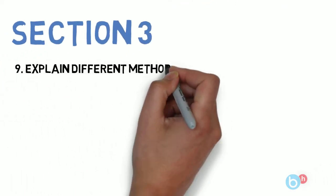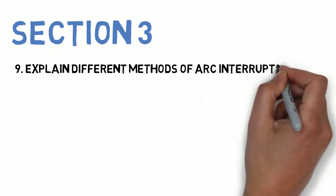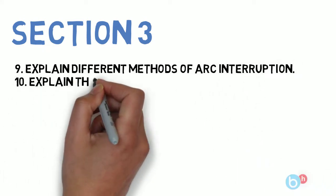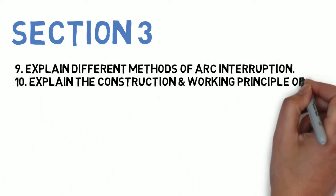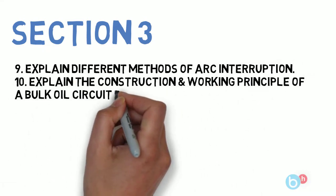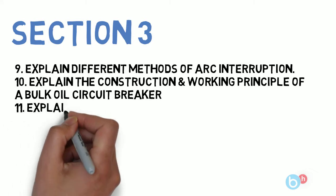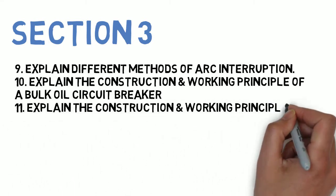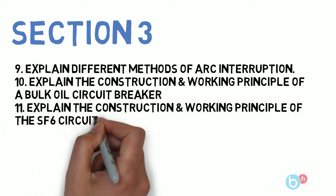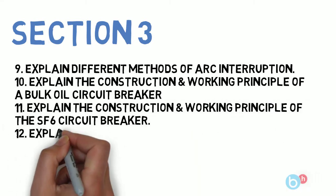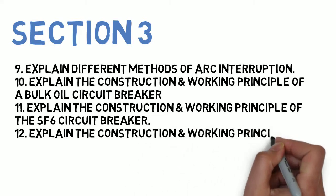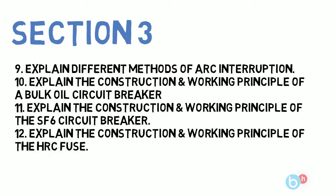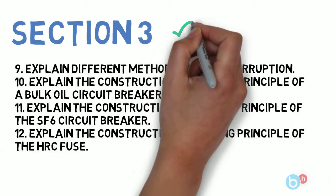Moving on to section three, there are four questions: first, explain different methods of arc interruption; next, explain the construction and working principle of a bulk oil circuit breaker; then, construction and working principle of an SF6 circuit breaker; and finally, explain the construction and working of an HRC fuse.